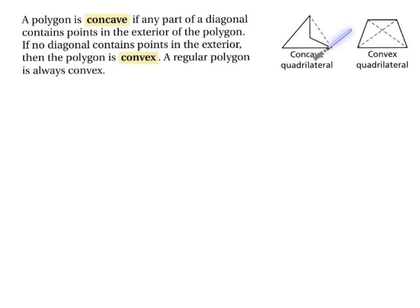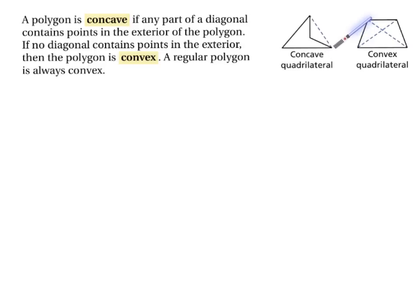Let's look at this quadrilateral. It has four sides — it is a quadrilateral. It's concave, however, because the diagonal contains points in the exterior of the polygon. So because this point is within the diagonal, it's concave. But these diagonals do not have any exterior points, so this one is convex. They are both quadrilaterals.